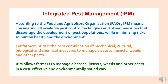First we will go through what is integrated pest management IPM. IPM is the best combination of mechanical, cultural, biological and chemical measures to manage diseases, insects, weeds and other pests. As per the Food and Agriculture Organization, IPM means considering all available pest control techniques and other measures that discourage the development of pest populations while minimizing risks to human health and the environment.